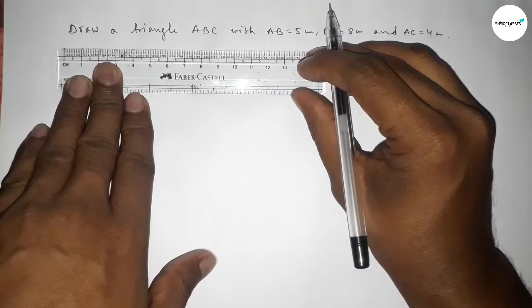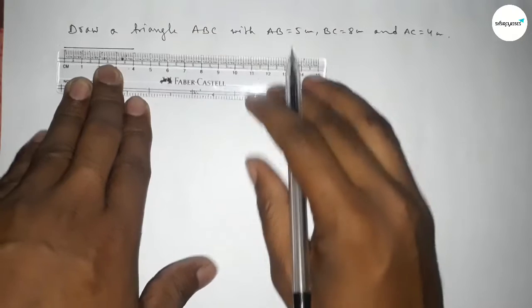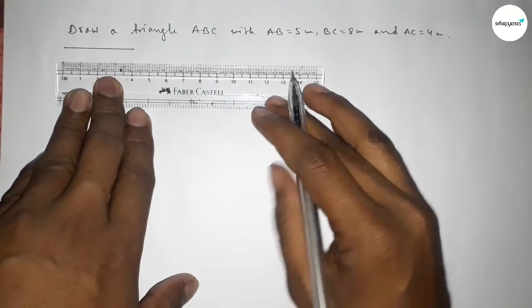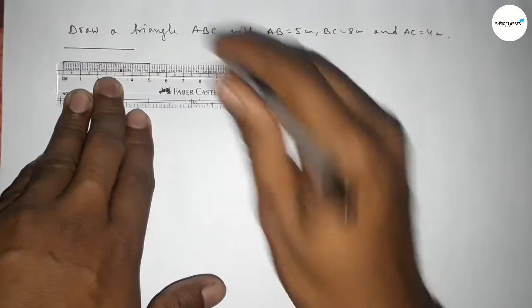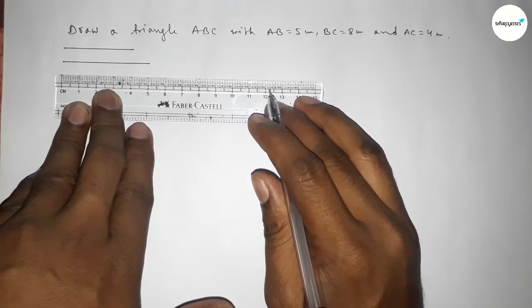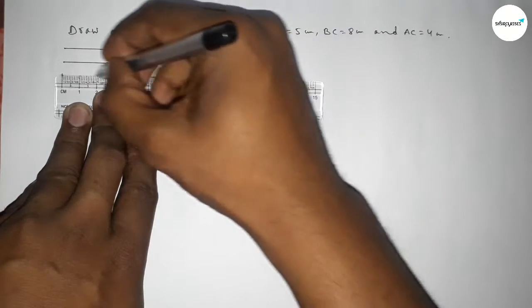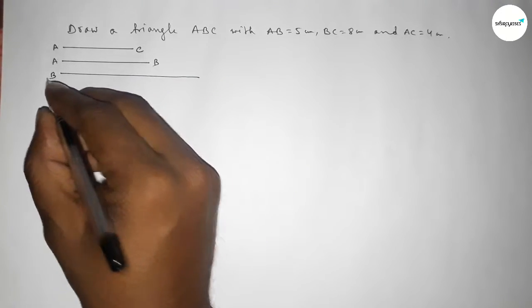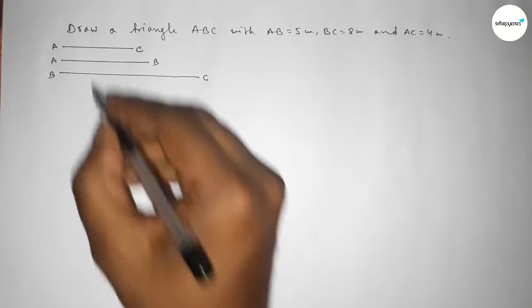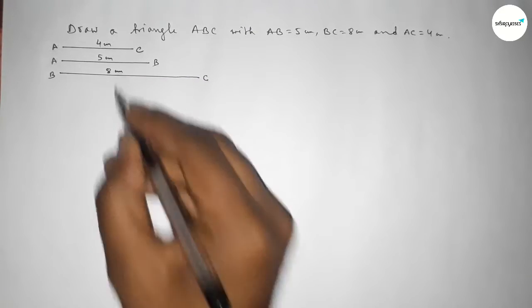First of all, we draw a line of length 4 centimeter, then a line of length 5 centimeter, and last a line of length 8 centimeter. So this one is the AC line, this one is AB, and this one is BC — 4 centimeter, 5 centimeter, and 8 centimeter.